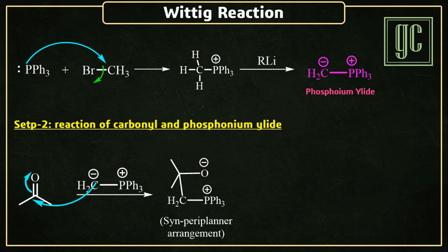Now, this negative charge attacks on the positive charge phosphine, and a four-membered cyclic structure is formed.